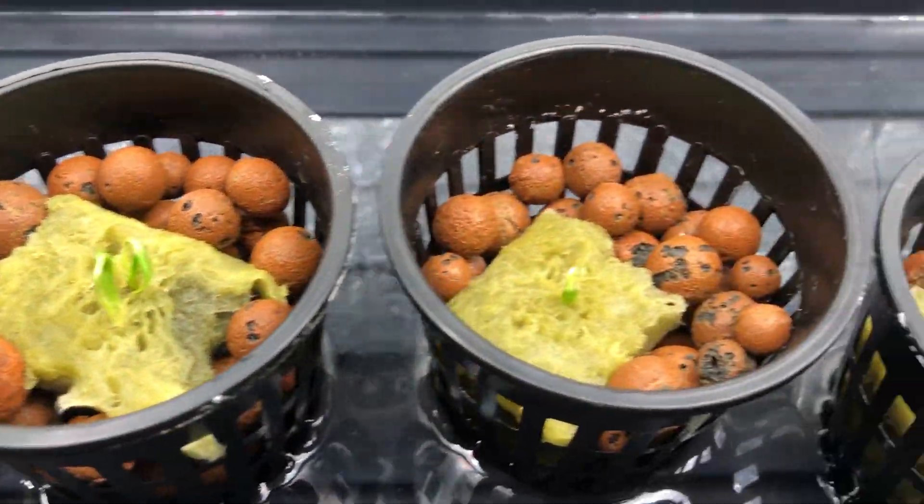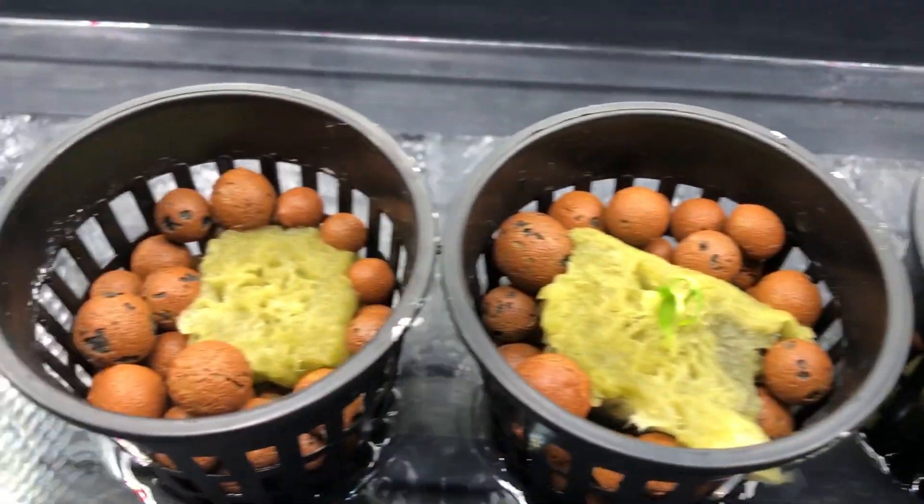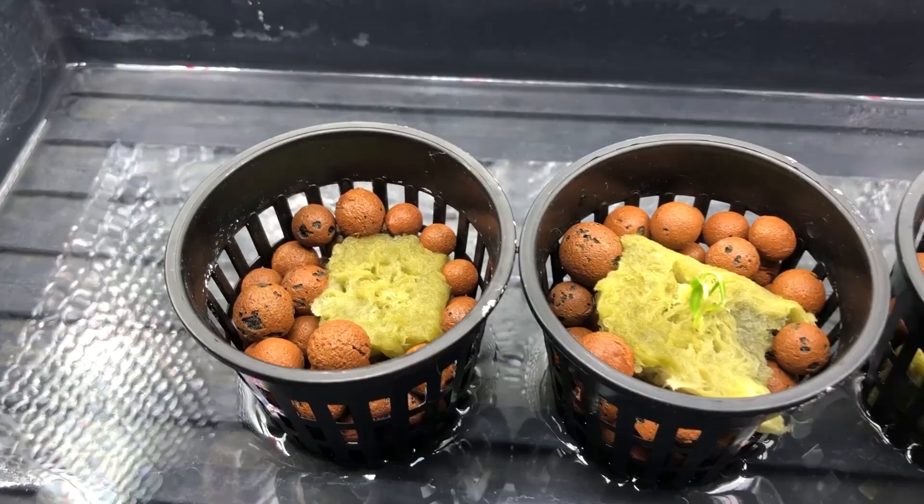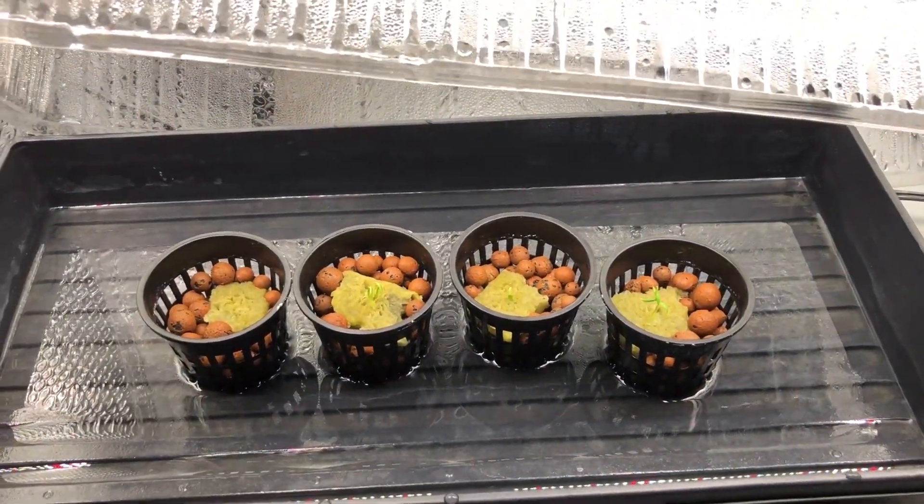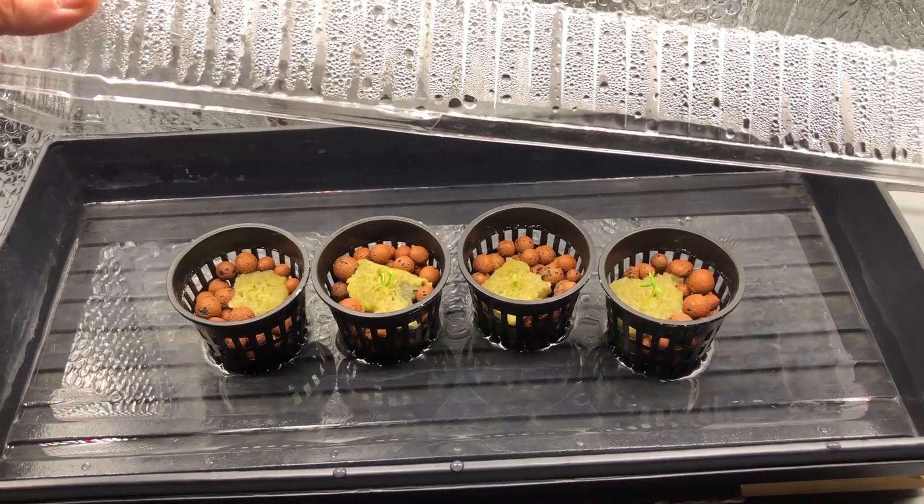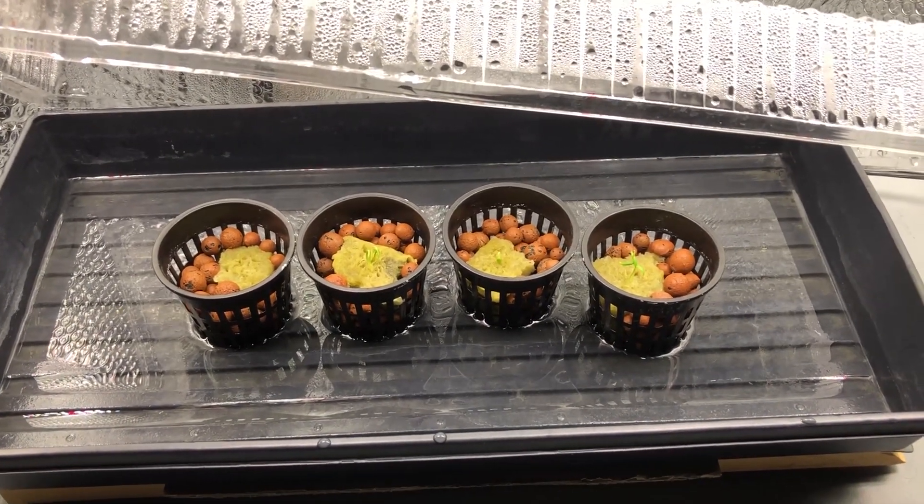We got two sprouts in that container, one there, and two in that container. Nothing on the one on the left just yet. This is why I do multiple plants when I start off experiments - it gives a better choice for everything to be as even as possible.